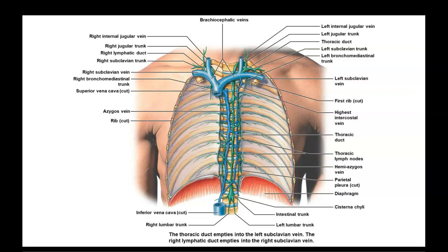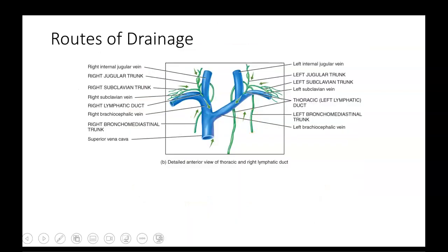Looking here, you can see how the lymphatic vessels flow right along with those veins and then how they come back in. You see the left subclavian trunk and the brachiocephalic veins — notice how that left subclavian trunk comes in right at the subclavian-brachiocephalic junction. On the other side, notice how the right subclavian vein and the right internal jugular vein come in to make the brachiocephalic veins, and the right lymphatic duct comes in between those two sections, bringing lymph back into the venous system and putting the fluid back into the blood.